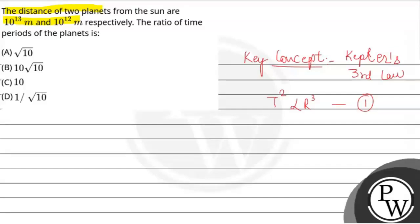Now, it is given the distance of two planets, that is R1, agar ham nahi consider kya, that is 10 to the power 13 meter and R2 is equal to 10 to the power 12 meter. You have to find the ratio of the time period, that is T1 over T2 hummara kya ho. Okay, so let us solve.